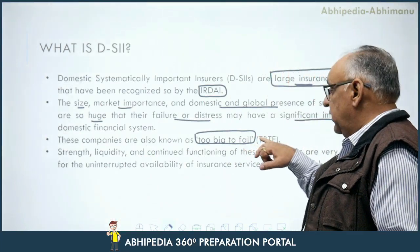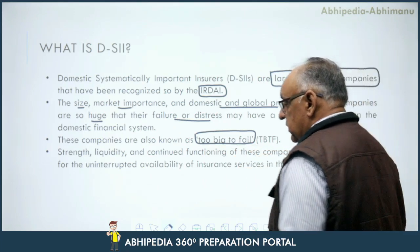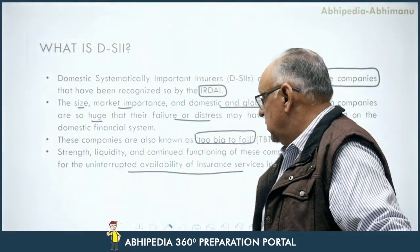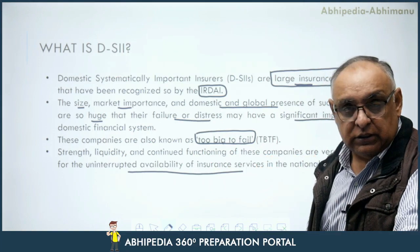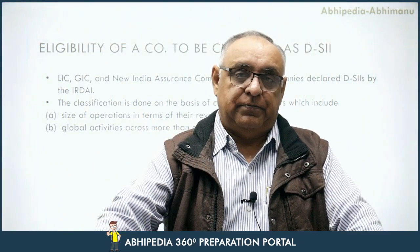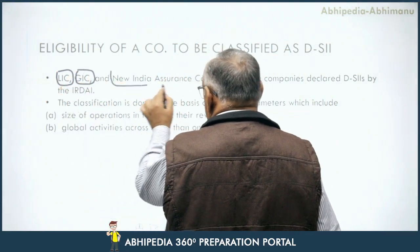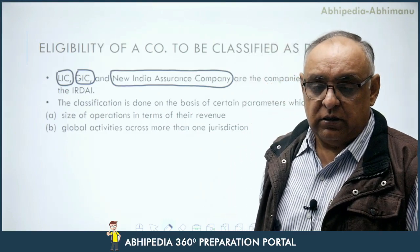If their failure occurs, that will have an unprecedented effect on the domestic financial system. That is why we call them 'too big to fail' companies. The strength, liquidity, and continued functioning of these companies are very important for the uninterrupted availability of insurance services in the national economy. So far, in our country, LIC and New India Assurance Company are the companies that have been declared as D-SIIs by IRDAI.